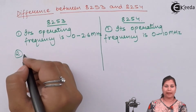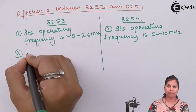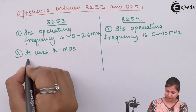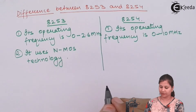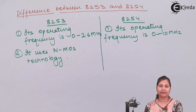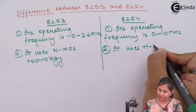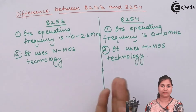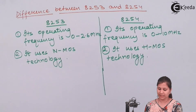The second difference is in the manufacturing technology. The 8253 IC is manufactured using NMOS technology — that is, N-type metal oxide semiconductor technology — whereas the 8254 uses a higher version of N-type MOSFET technology called HMOS technology. This is the manufacturing difference between the two ICs.